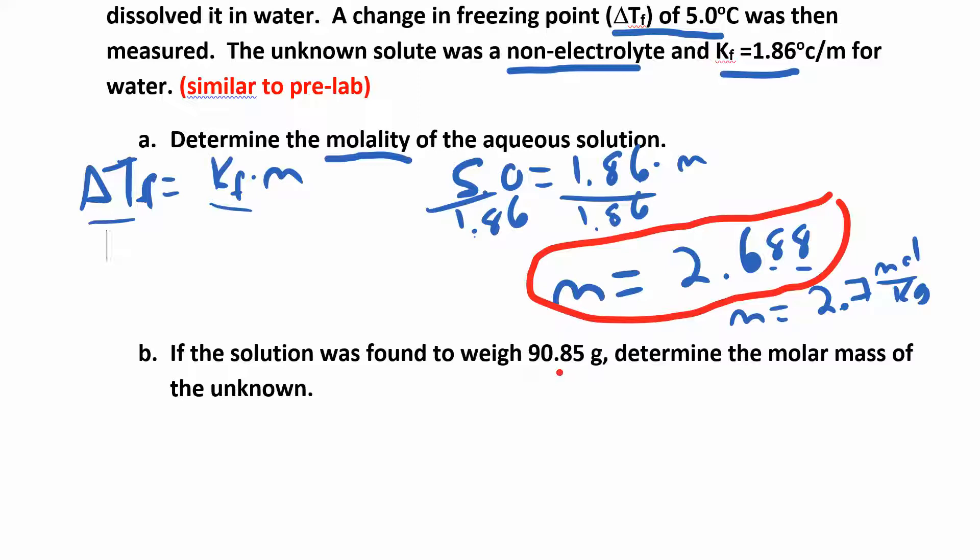Now if the solution was found to weigh this much, find the unknown - find the molar mass of the unknown. So at this point think about what's in a solution. The solution is two things, right? You have the solute plus the solvent.